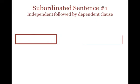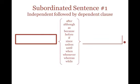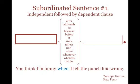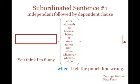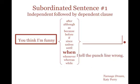The first way has the independent clause first, followed by a subordinating conjunction, like 'when' or 'because.' This subordinating conjunction is what makes the dependent clause dependent. For example: 'You think I'm funny when I tell the punchline wrong.' Here, 'You think I'm funny' is the independent clause. Notice that you do not need a comma.